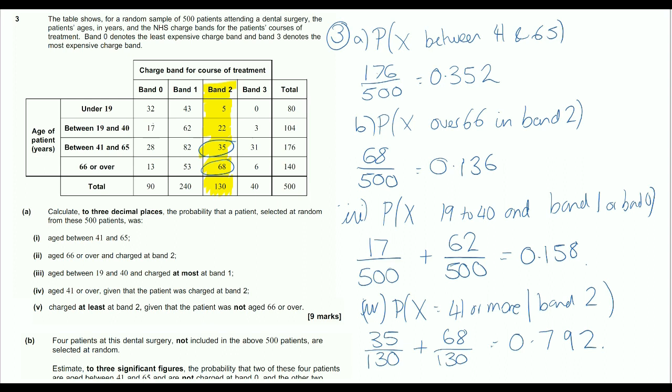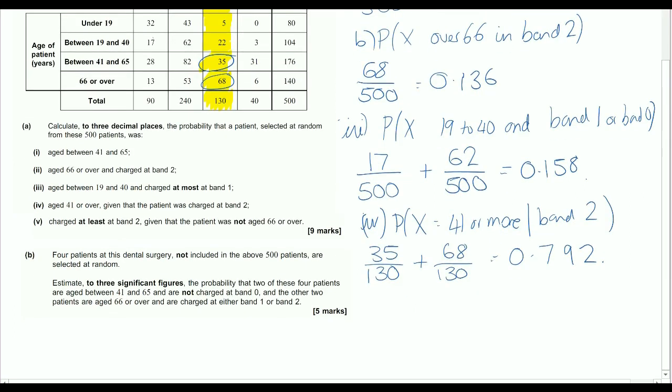Now for part 5, charge at least band 2, given that the patient was not over 66. So they are at least band 2, so that means that they could be band 2 or band 3, given that they were not 66 and over.